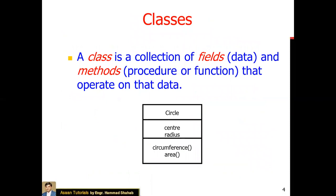A class is a collection of fields and methods, like procedure functions, that operate on that data. A class is basically a collection of fields, data, methods, and member functions. Objects and their attributes are accessed using the dot operator. We will find the specific methods and apply a method to the object.